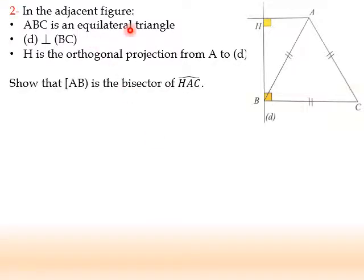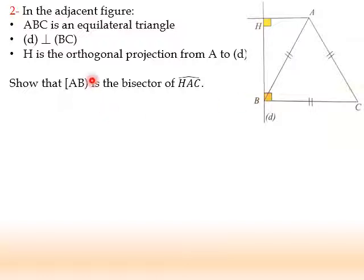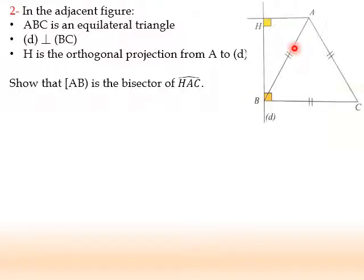In the adjacent figure, ABC is an equilateral triangle. D is perpendicular to BC at point B. H is the orthogonal projection from A to D. I have to prove that AB is the bisector of angle HAC. The bisector is a semiline that divides the angle into two equal adjacent angles. So I have to prove that angle HAB equals angle BAC.